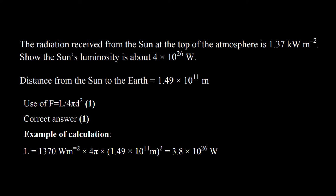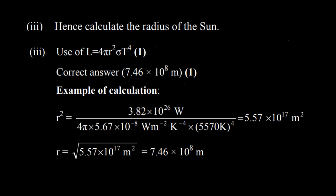We substitute the values so luminosity will be the product of flux with 4 pi d squared. The distance from the Sun to Earth is already given, and finally we can find out the radius of the Sun with the help of the formula L equals 4 pi r squared sigma T to the fourth power. We substitute the values, take r as the subject of the formula, and calculate accordingly.